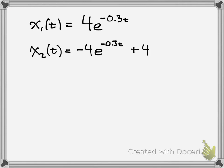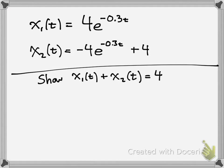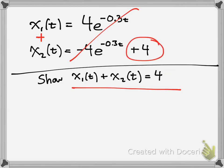Now they might, in this problem, say show that x1 of t plus x2 of t is equal to 4. Well, it's actually quite simple. If you add these two together, that's what they want you to do. These would cancel. Therefore, this statement is true. This would be left over. What does that mean?